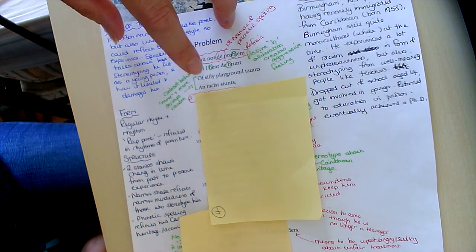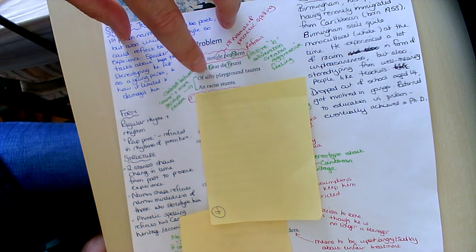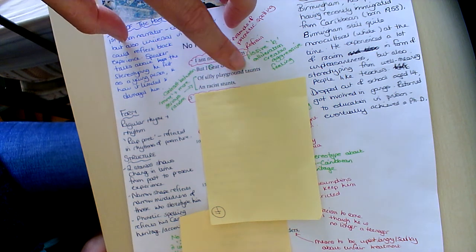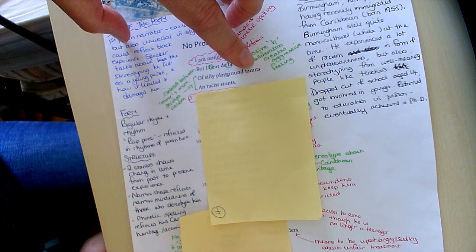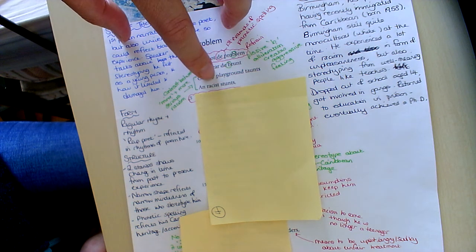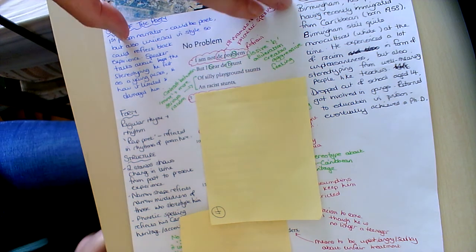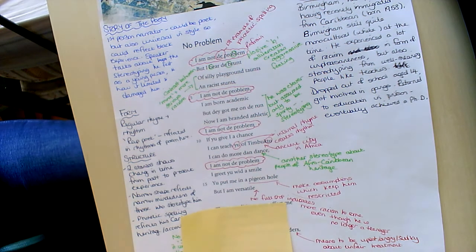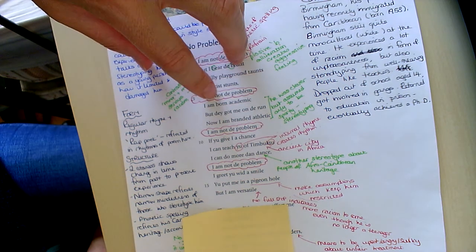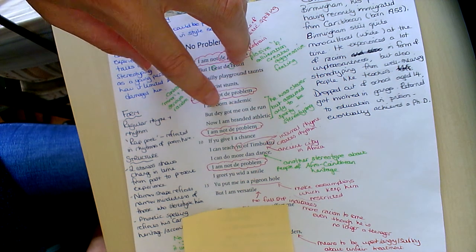And here we've got the contrast between kind of kiddie minor racism, having names called, that's what taunting means, calling names, which is still very hurtful and damaging, but not as damaging perhaps as more serious racism. Second quatrain we have the repeated refrain, I am not the problem.